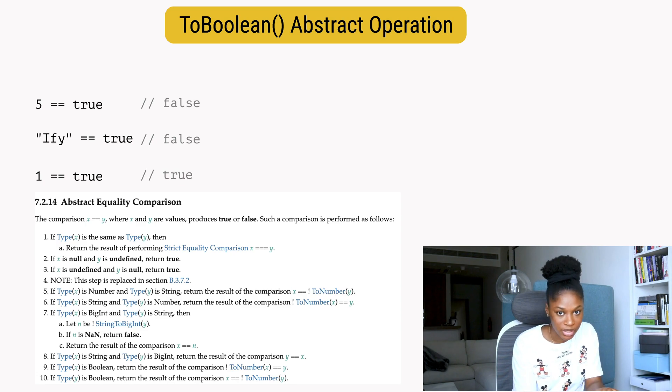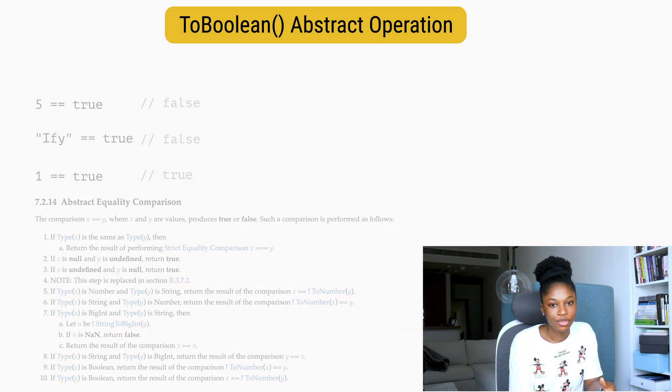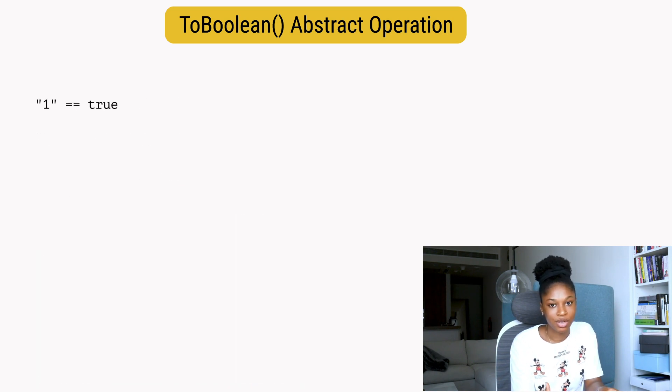So if we try to compare this numeric string literal to true, it first converts true to a number, and true is loosely equal to one. So we have a string and a number now. Let's see what the spec says for comparing strings to numbers or strings with numbers.